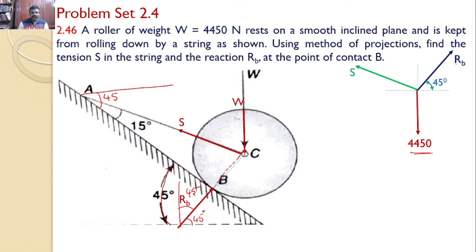I want to find the angle made by this string with the horizontal. So the total angle is 45. Given that this is 15, so this angle is equal to 30 degrees. That means the S force makes an angle of 30 degrees with the horizontal.